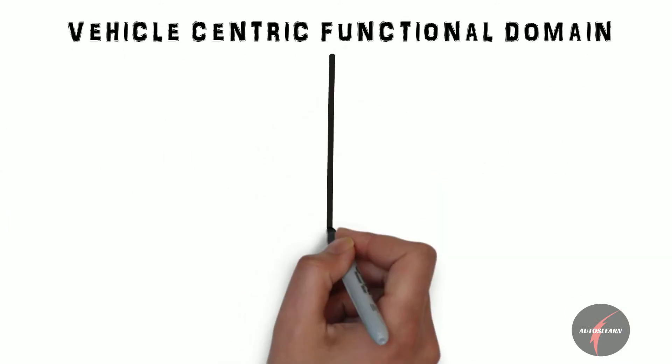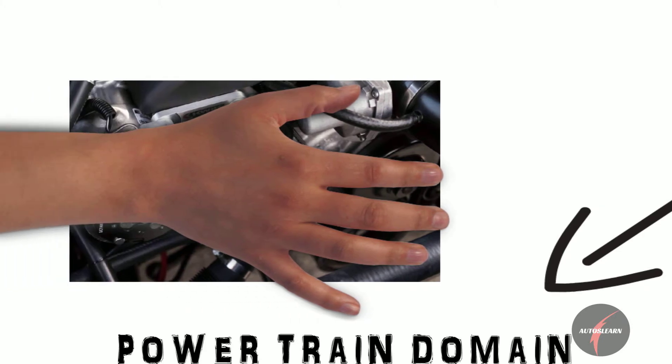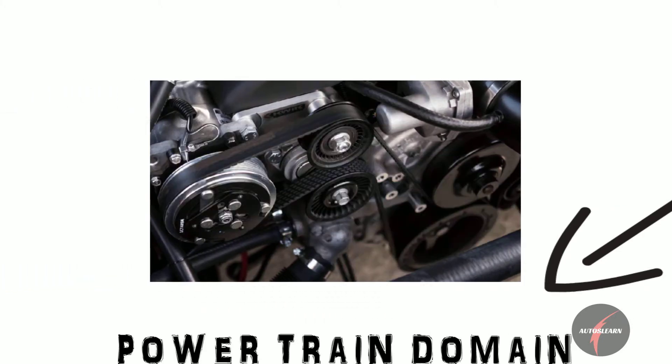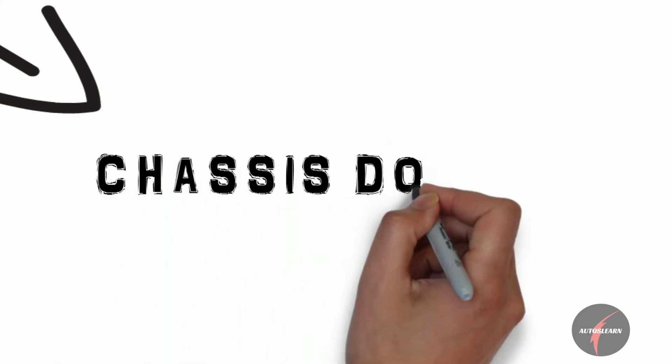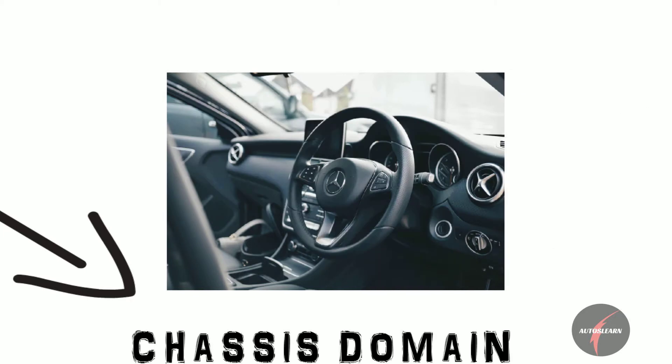Now considering the vehicle-centric functional domain, this can be classified further into the powertrain domain which deals with the system that participates in the longitudinal propulsion of the vehicle including the engine, transmission, etc. The chassis domain refers to the four wheels and their positioning and movement. The systems are mainly the steering and the braking in this domain.